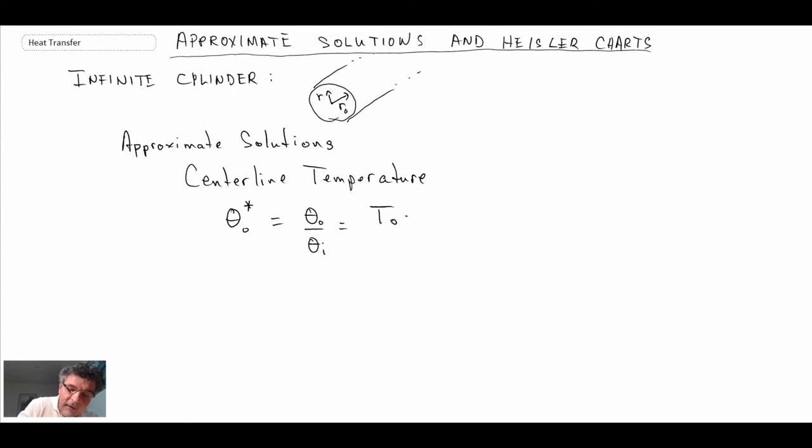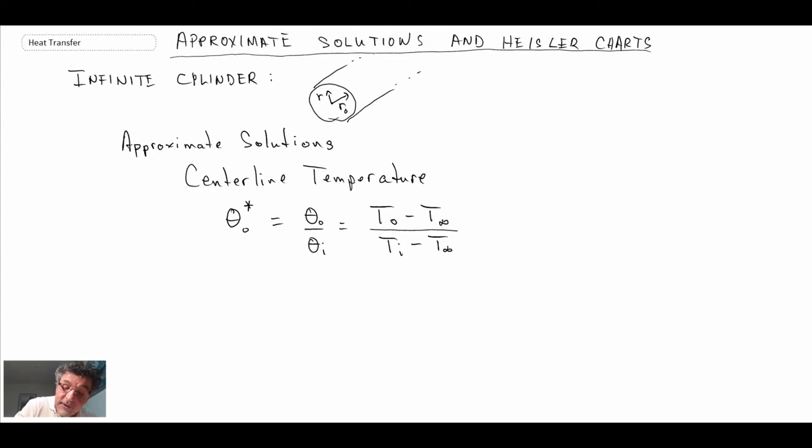And defining what those are: centerline temperature minus T infinity divided by the initial temperature of the entire cylinder minus T infinity. And the solution here, just like we saw for the slab, is going to look like this.